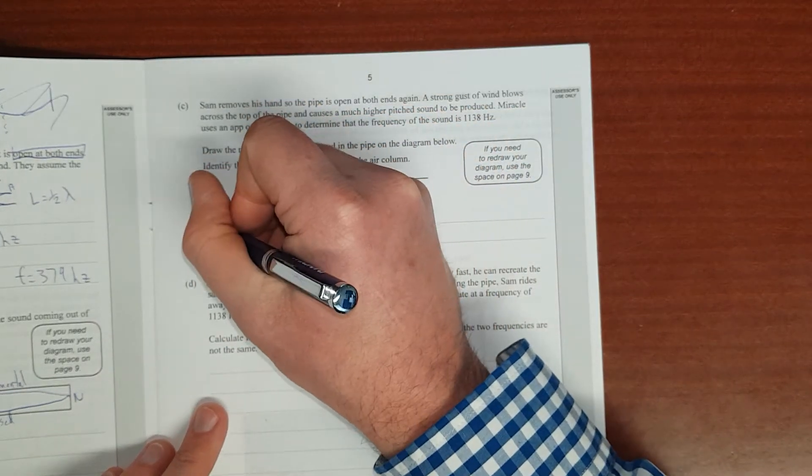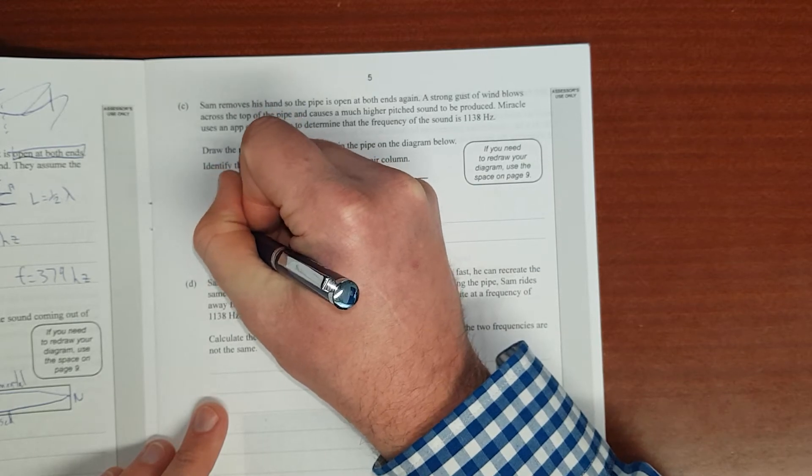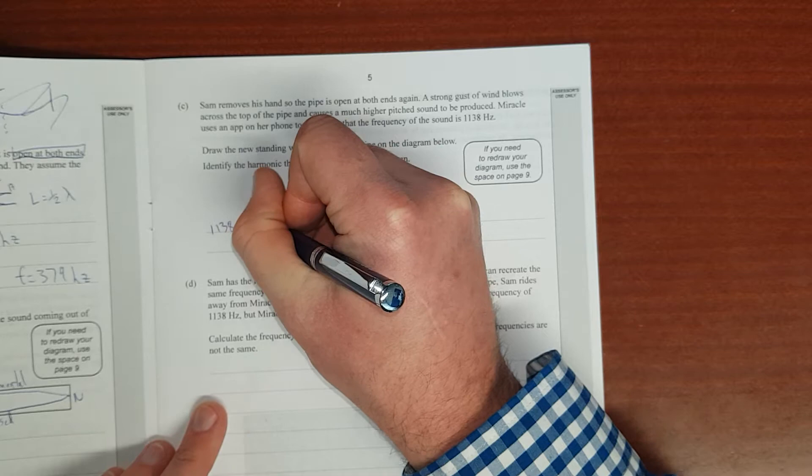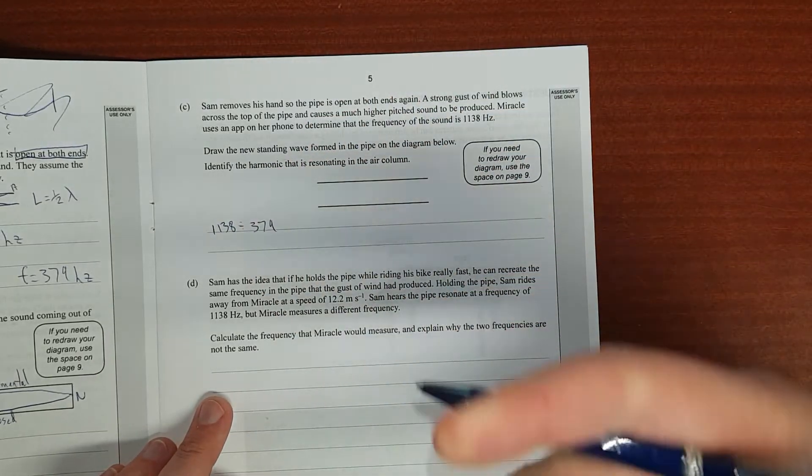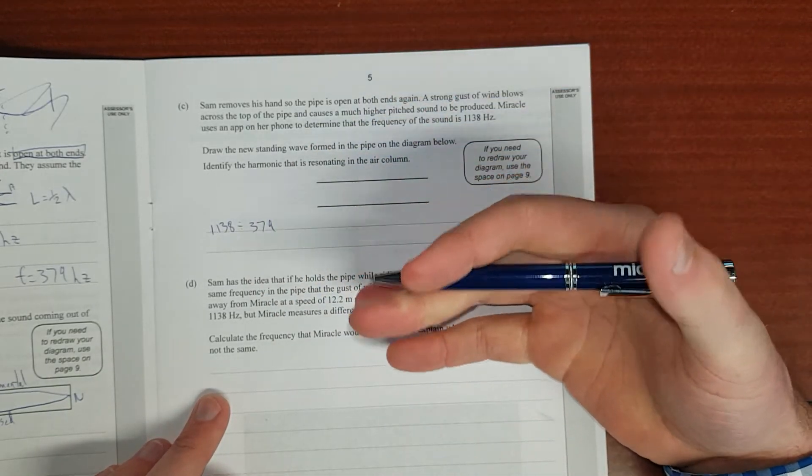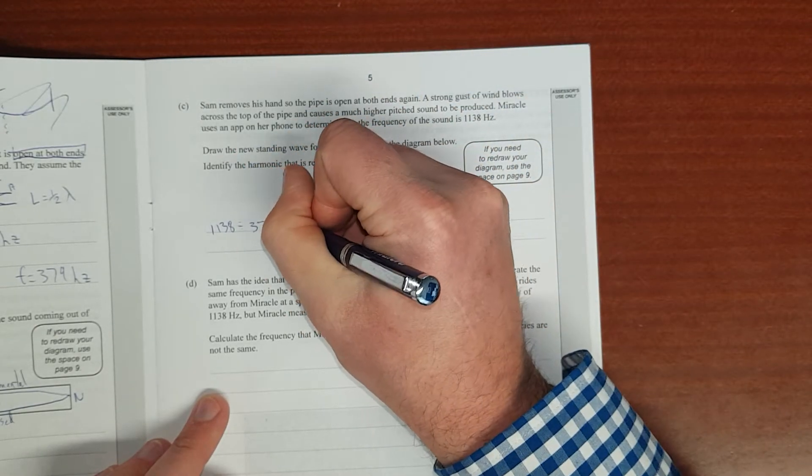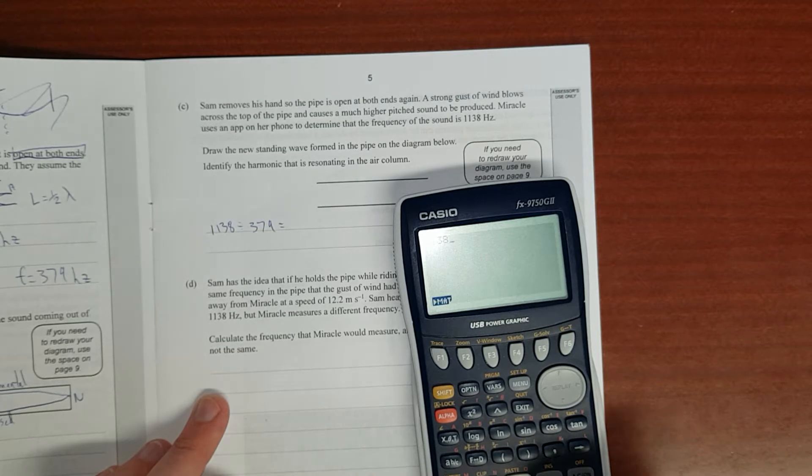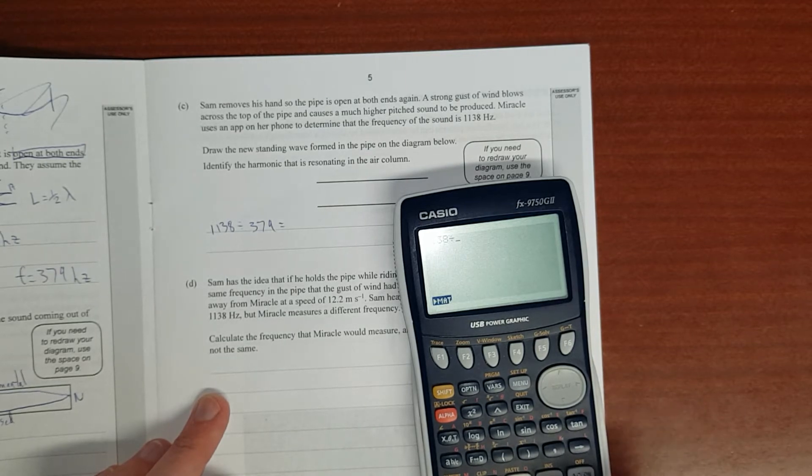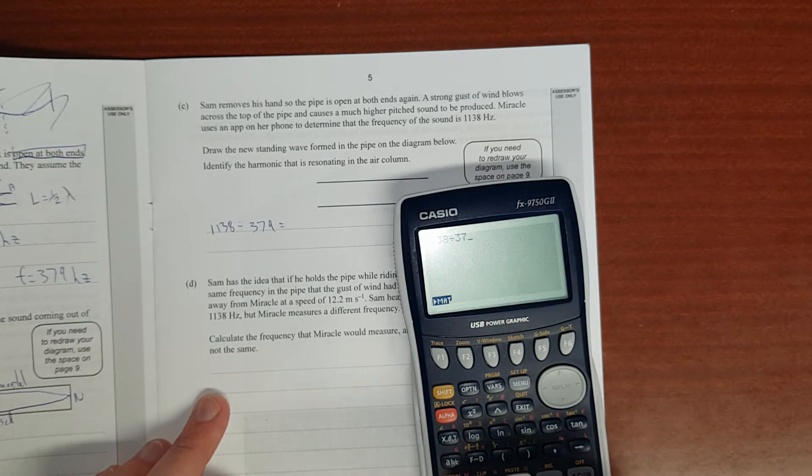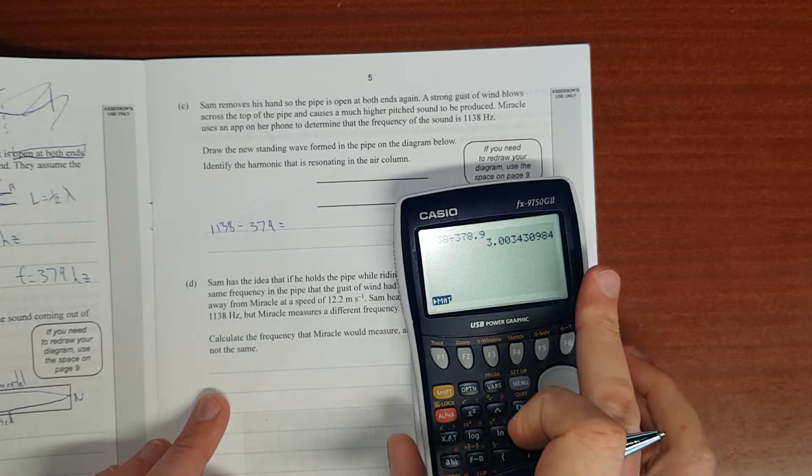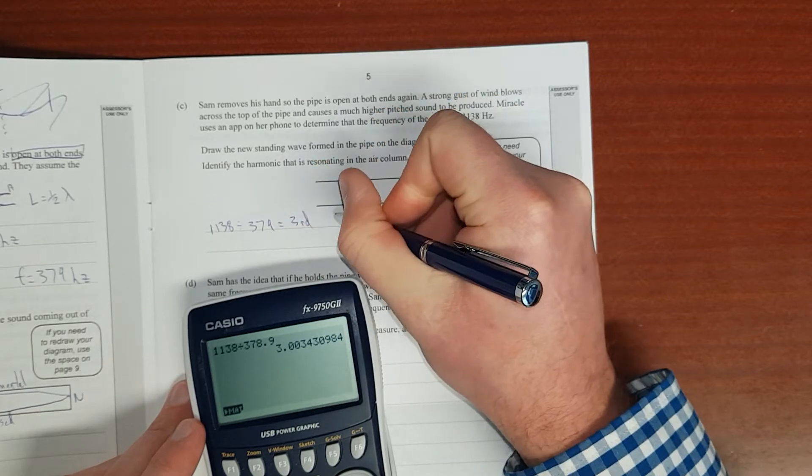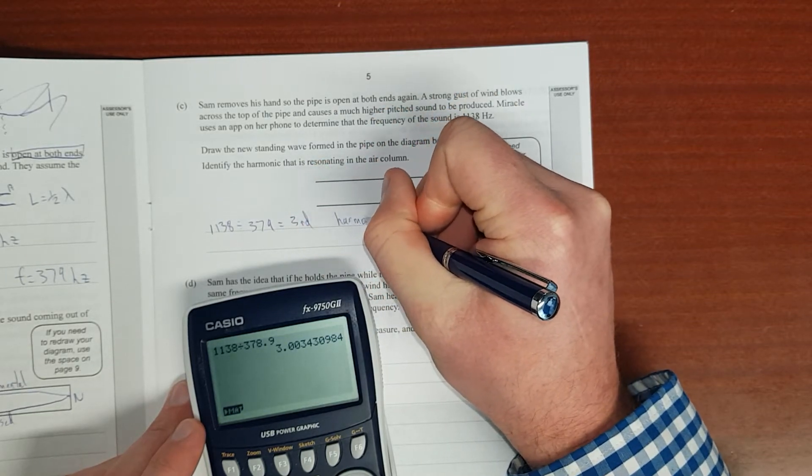We're going to go 1,138 divided by the fundamental, which is 379, because harmonics are just multiples of the fundamental. So the fifth harmonic is just 5 times the fundamental. That is going to equal 1,138 divided by 378.9, which is essentially 3. So this is the third harmonic.